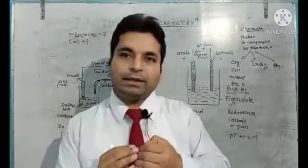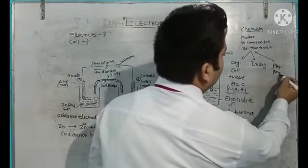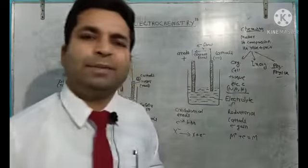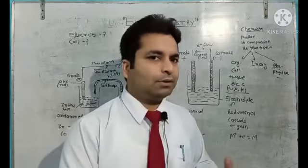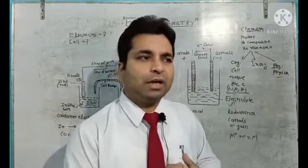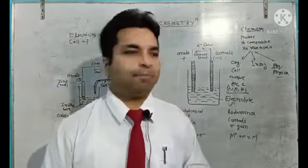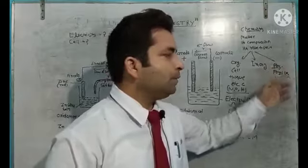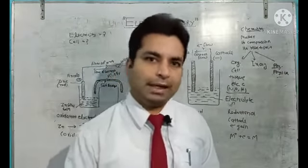In physical chemistry, as the word 'physical' suggests, it relates to measurement. Here we study the rate of reactions — how fast or how slow a reaction is occurring. This branch mainly studies the rate and speed of reactions.